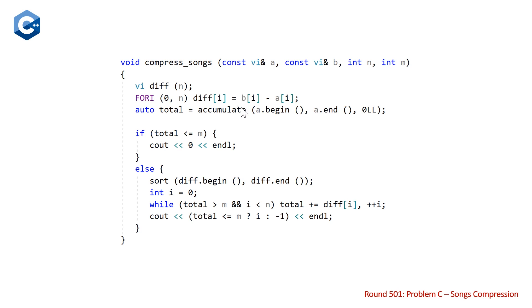Note that we are doing it backwards, b minus a, because we want those differences to be negative. And then we're calculating our total using the accumulate function, which is just summing all of the values in our vector a.